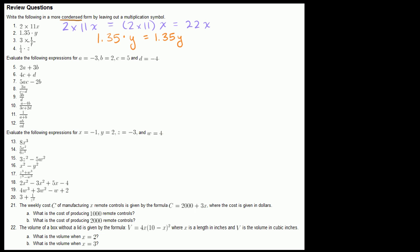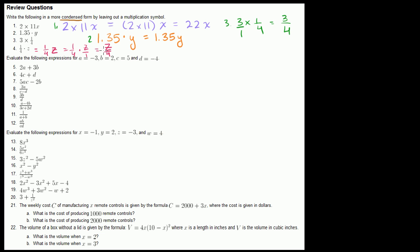Problem 3: we have 3 times one-fourth. That's the same thing as 3 over 1 times one-fourth. Multiply the numerators: you get 3. Multiply the denominators: 1 times 4, you get 4. So problem 3 gives us three-fourths. And then finally, problem 4: one-fourth times z. Just like 1.35y equals 1.35 times y, we can rewrite this as one-fourth z. Or equivalently, 1 over 4 times z over 1, which is z over 4. All of these are equivalent.